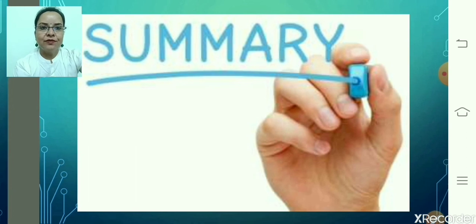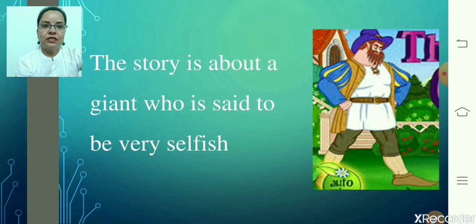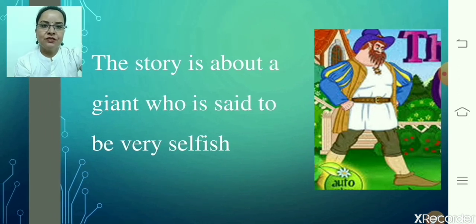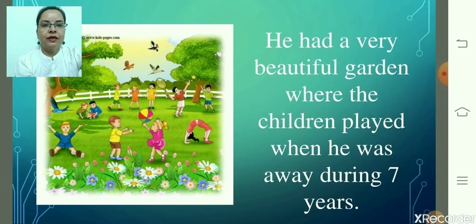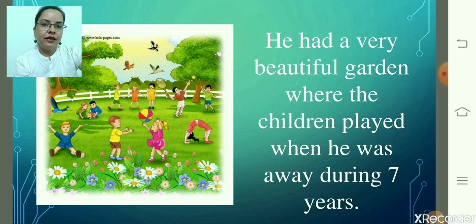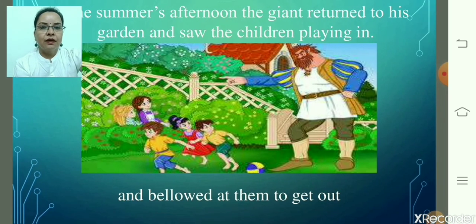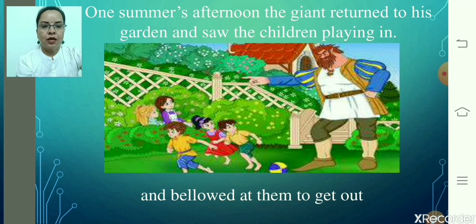Let's talk about the summary of the chapter. Look at the picture — you can see a giant man standing in the garden. This story is about a giant who is said to be very selfish. He had a beautiful garden where children played when he was away. For seven years he had not been in his garden, and during that time children from the surrounding area used to come to this garden to play. One summer afternoon the giant returned and saw the children playing.